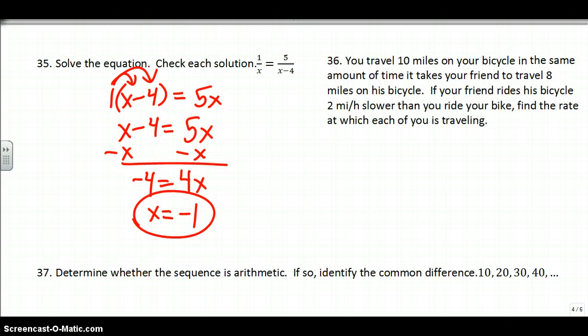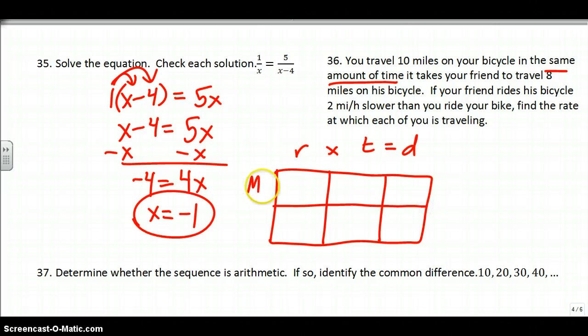36. These are fun. You travel 10 miles on your bicycle in the same time it takes your friend. Let's underline same time because that's important. It takes your friend to travel 8 miles on his. If your friend rides his bicycle 2 miles per hour slower than you, find the rate at which each of you is traveling. You remember these? Rate times time equals distance problems. You had to make your little chart. There's me, and there's my friend. I travel 10 miles - that's a distance. My friend travels 8 miles - that's distance. My friend rides 2 miles per hour slower than I do, but I don't know how fast I'm riding. That's a rate - I'm going to call it x. My friend goes 2 miles per hour slower, so it's my speed minus 2.